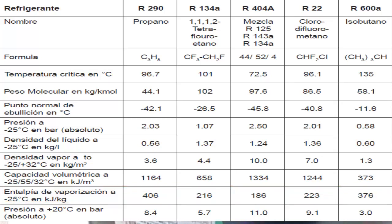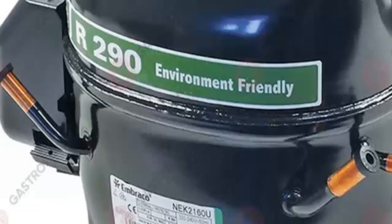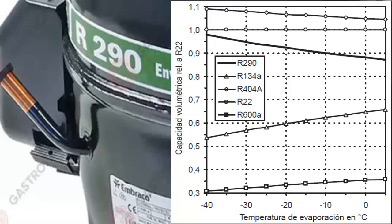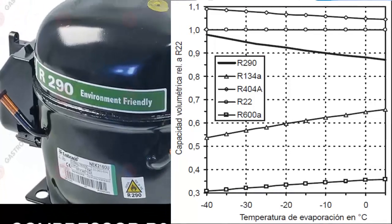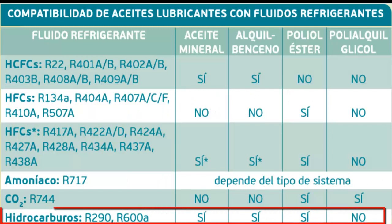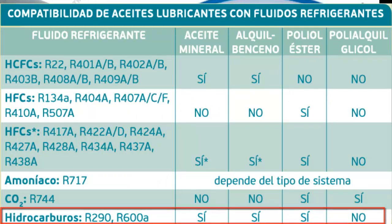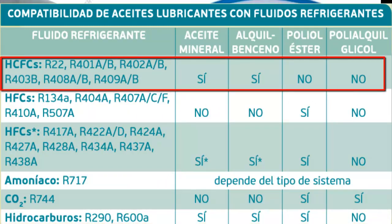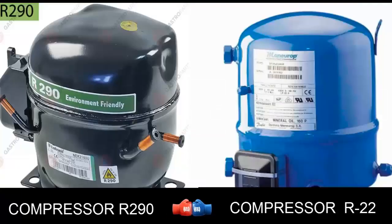The compressor with R290 has approximately 90% of the volumetric capacity of the compressor with R22. R290 is compatible with mineral oil, alkylbenzene, and polyolester oil, while R22 is mostly used with alkylbenzene and mineral oil.